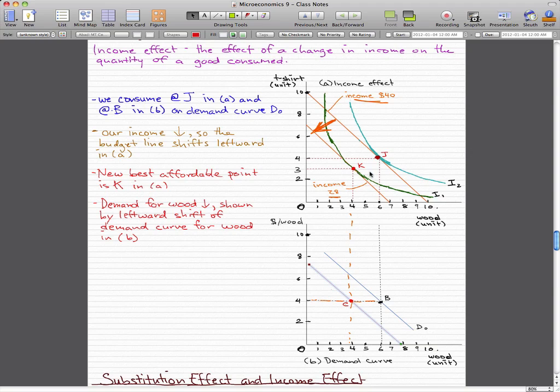So what happened actually was originally our income was $40. We consumed at point J and at point B on demand curve D0. Our income fell from $40 to $28, so the budget line shifted leftward. And our new best affordable point was K on the lower indifference curve I1.